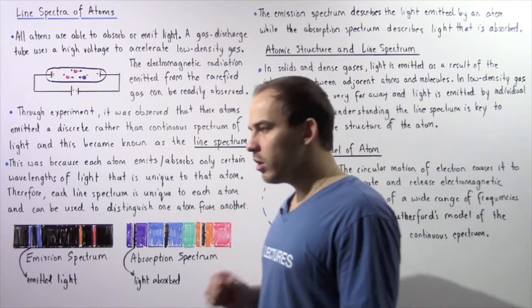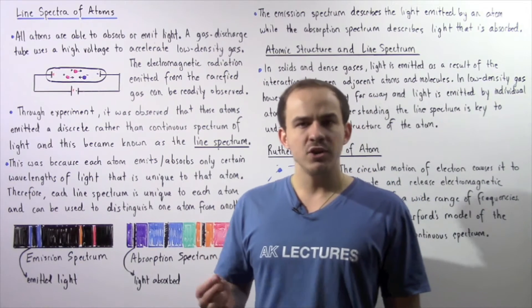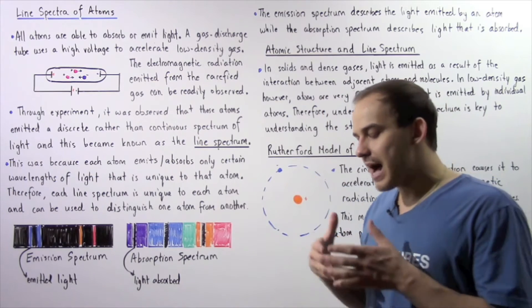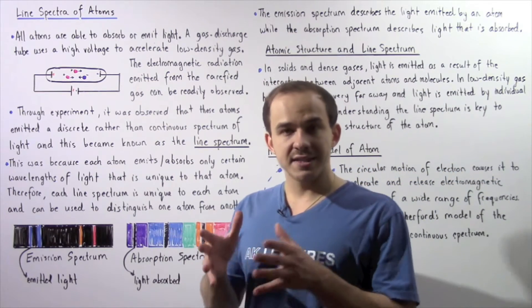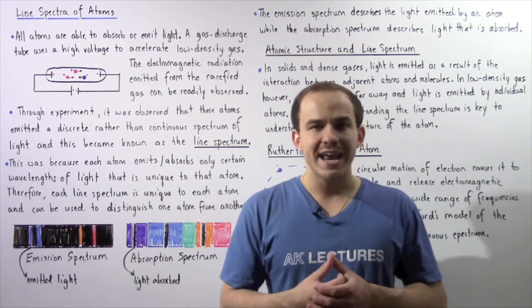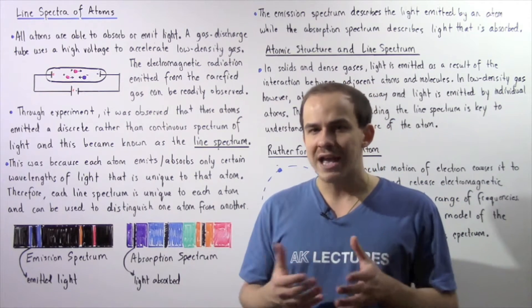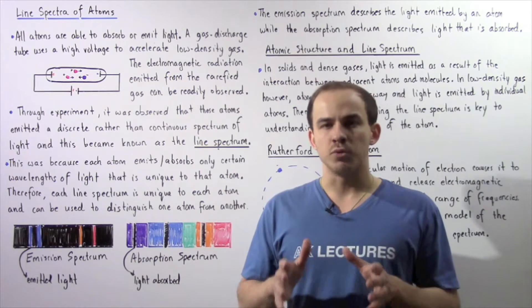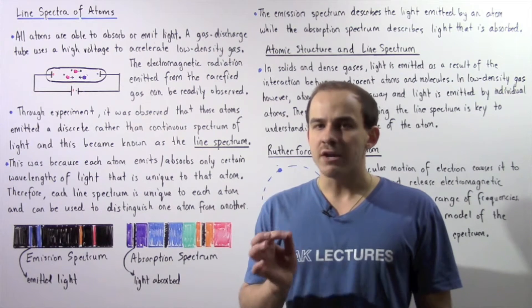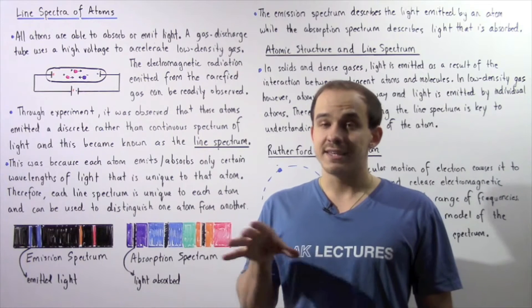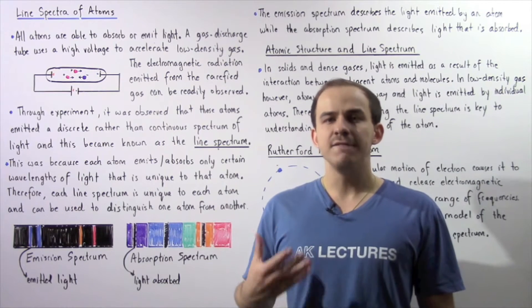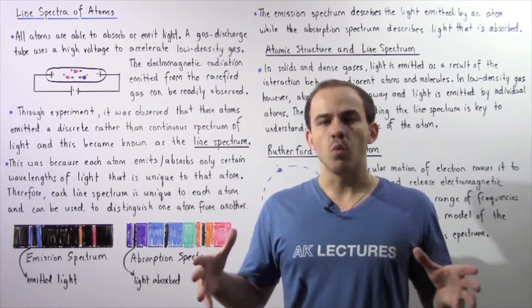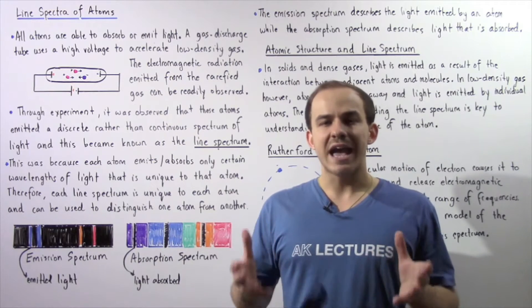Let's begin by recalling the fact that all atoms emit or absorb electromagnetic radiation. Inside solids, liquids, and very dense gases, the electromagnetic radiation is emitted as a result of the interactions between adjacent molecules and atoms found in close proximity. Now what about in a rarefied gas? A rarefied gas has very low density and very low pressure, meaning the atoms are found very far away from one another and basically do not interact.